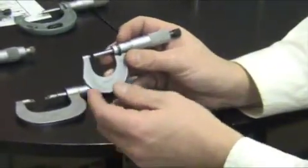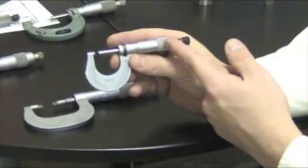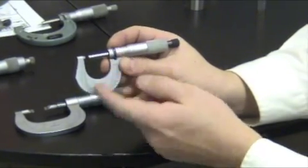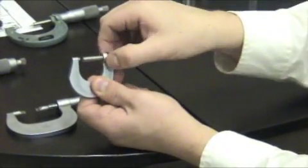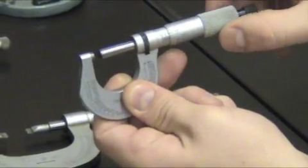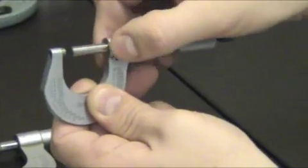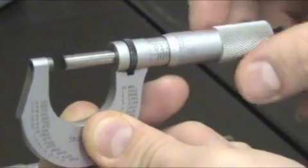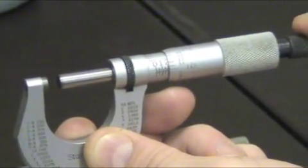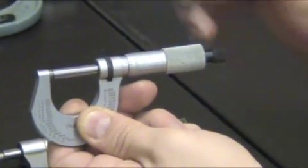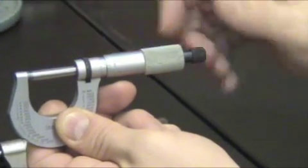So again, we have the thimble, the spindle, the anvil. This here is the blocking mechanism when you turn this. We have the ratchet, which is just used to make sure that the spindle is closed.